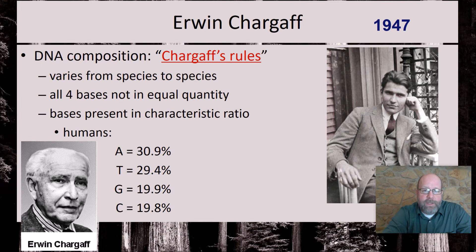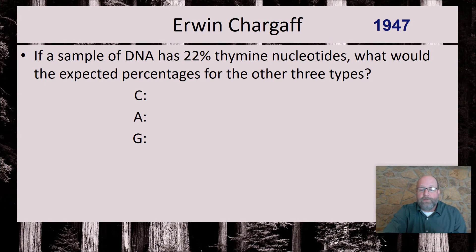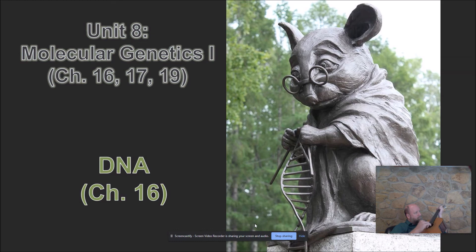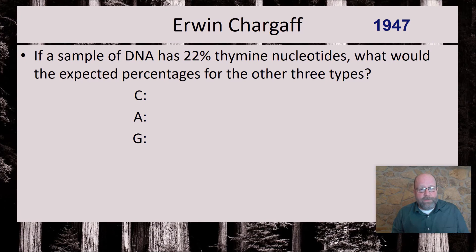Chargaff figured out that when you break down DNA into its components, the percentage of adenine always equals the percentage of thymine, and the percentage of guanine always equals the percentage of cytosine. So A always pairs with T, and G always pairs with C. For example, if a DNA sample has 22% thymine, then adenine is also 22%, and since A+T = 44%, the remaining 56% is split equally: 28% cytosine and 28% guanine.